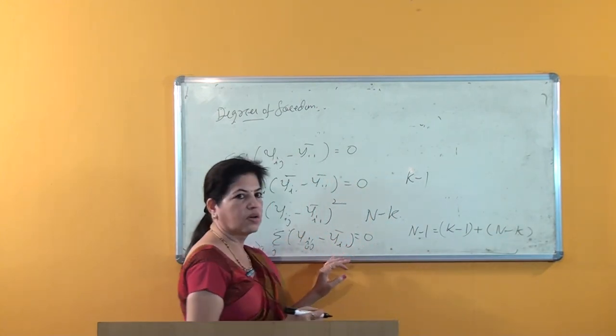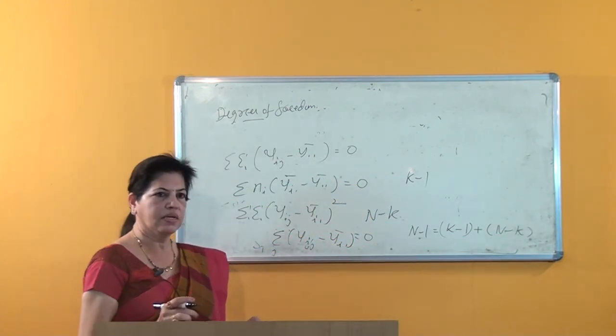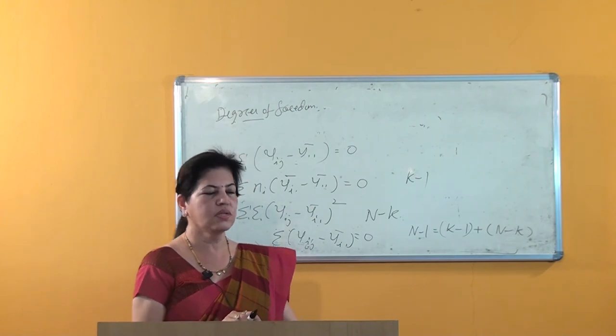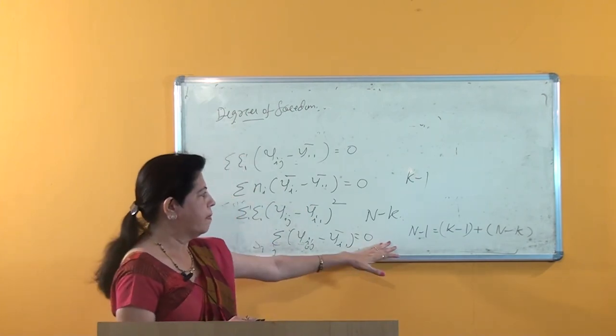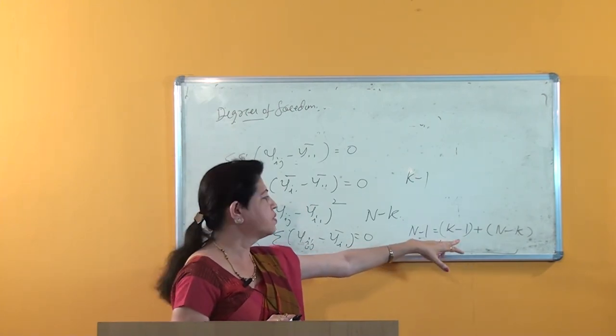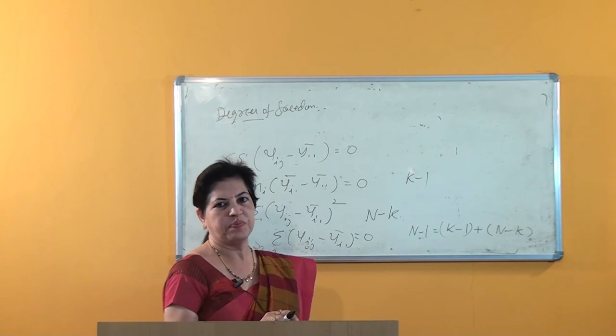We can observe that the sums of squares are additive in nature, and therefore the degrees of freedom are also additive in nature.